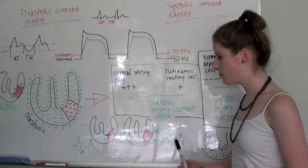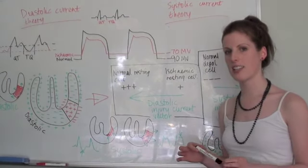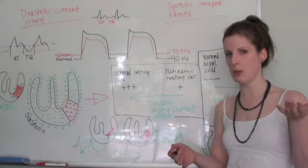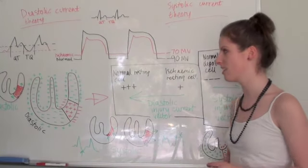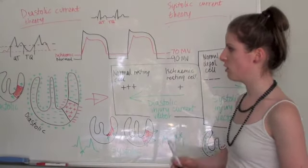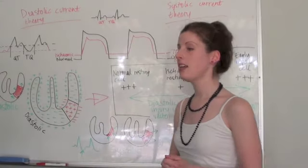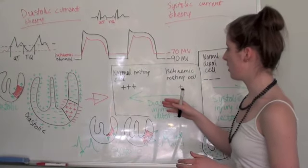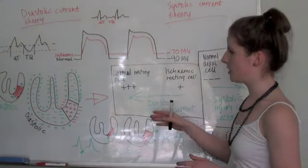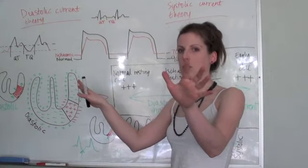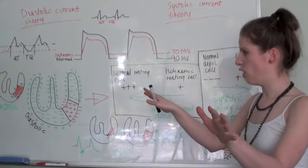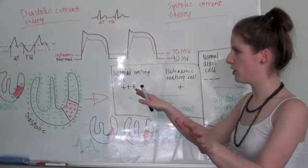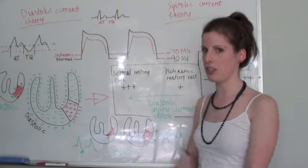Now with the transmural infarct, this is where it gets very confusing, especially when I'm talking about both diastolic and systolic. You can recall with the diastolic that the main vector is moving from the ischemic area outwards. So therefore you get the negative deflection.